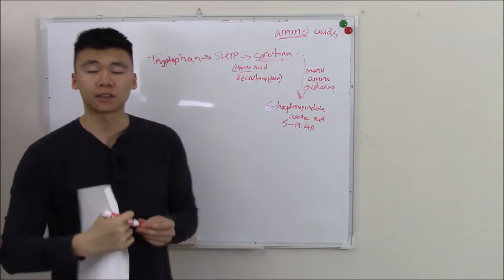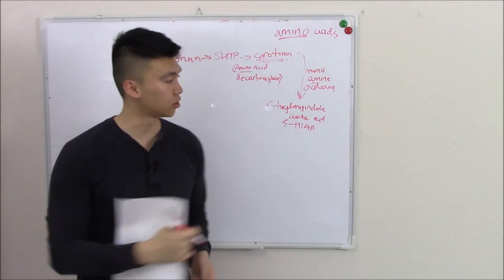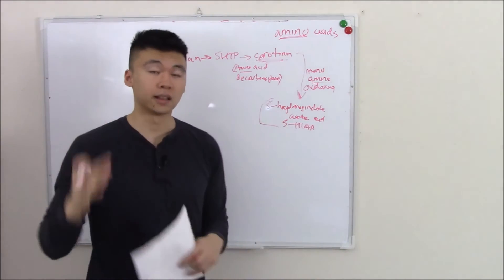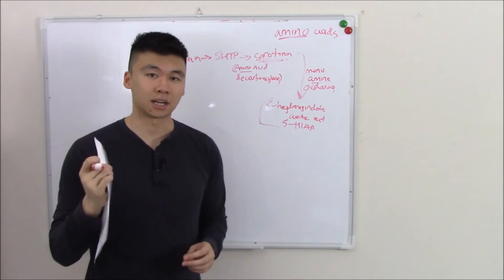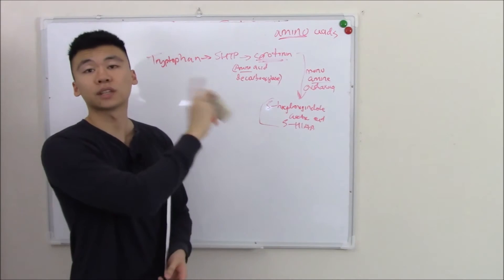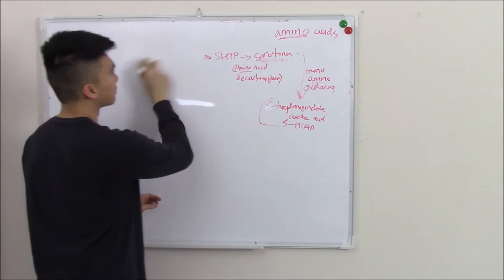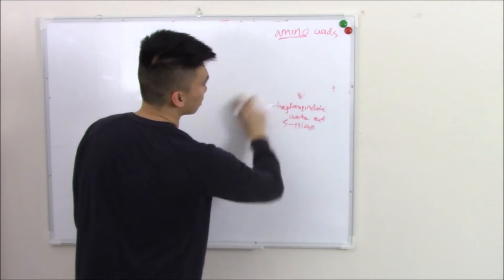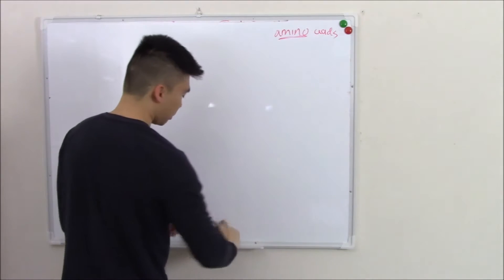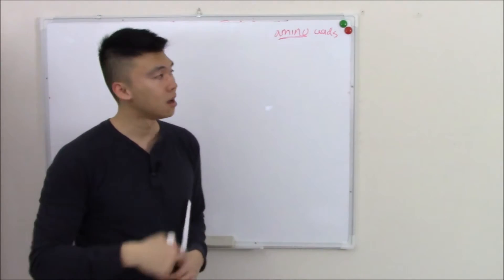Important because if there are tumors that secrete too much serotonin you can measure this in your urine. And elevated levels show you there's too much serotonin coming from somewhere. That's just a brief overview. There's something more important however that I want to get to. And that is amino groups creating catecholamines.